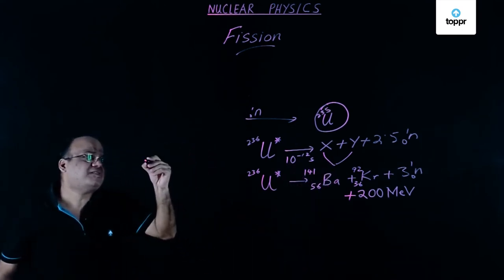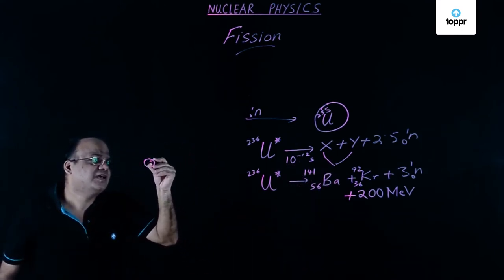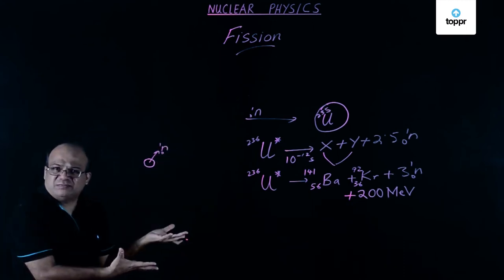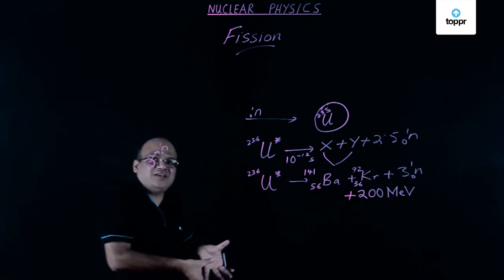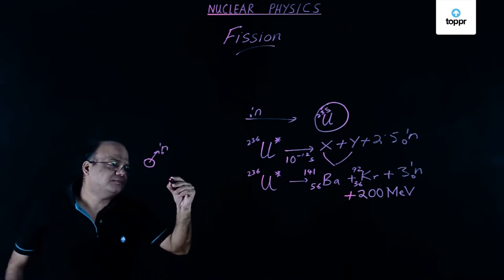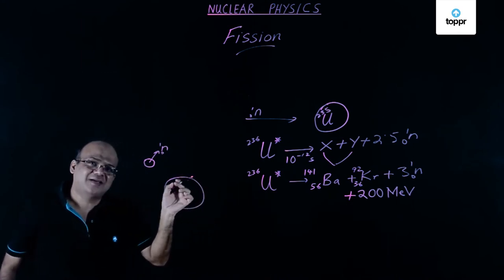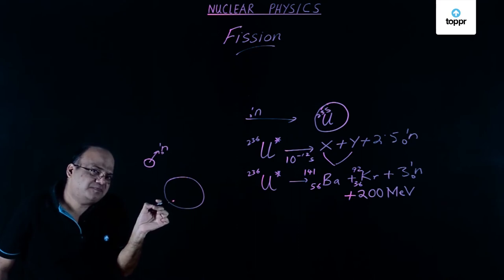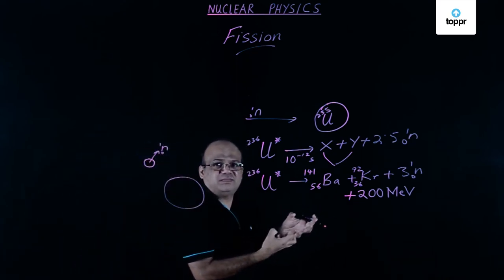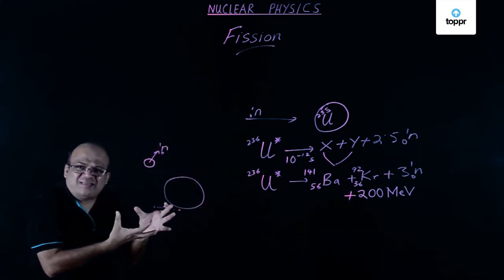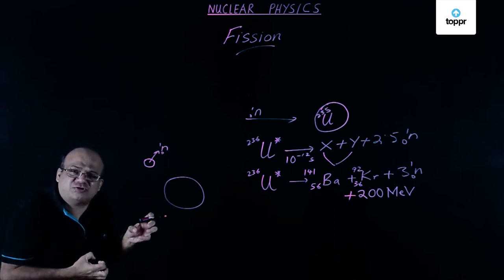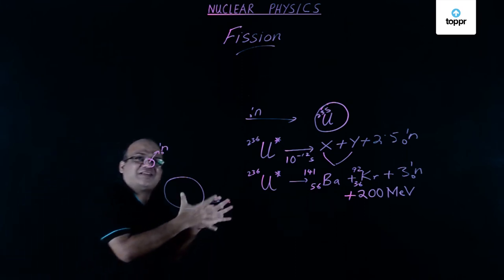If the sample is small, the neutrons can escape without causing further fission and the reaction will not continue. But if the sample size is big, many neutrons will not escape and we can have a chain reaction. We need a size about the size of a cricket ball for a chain reaction to start — that size is called the critical size.